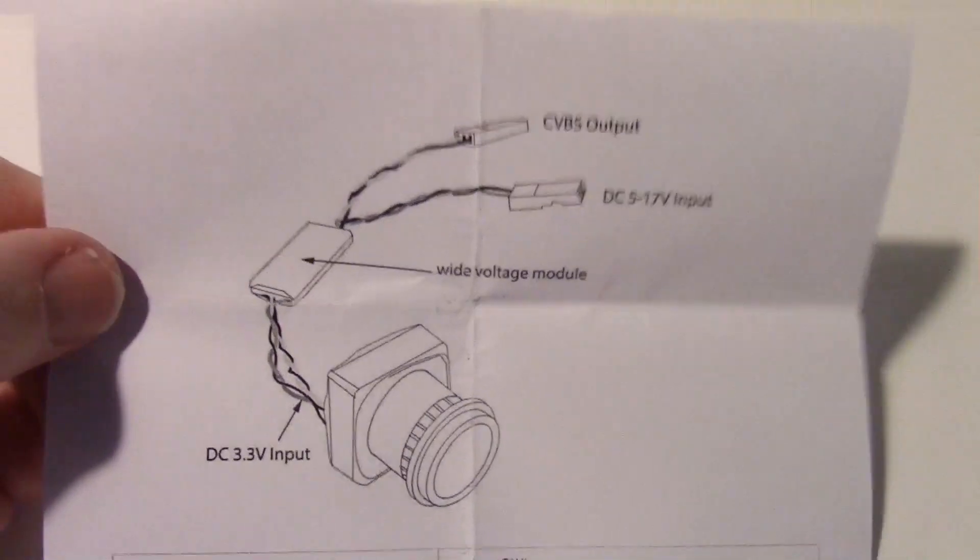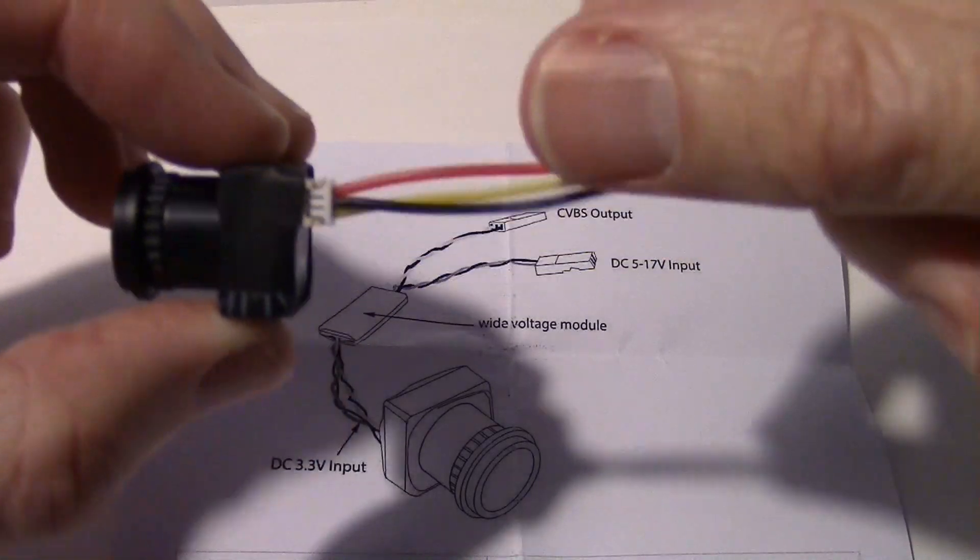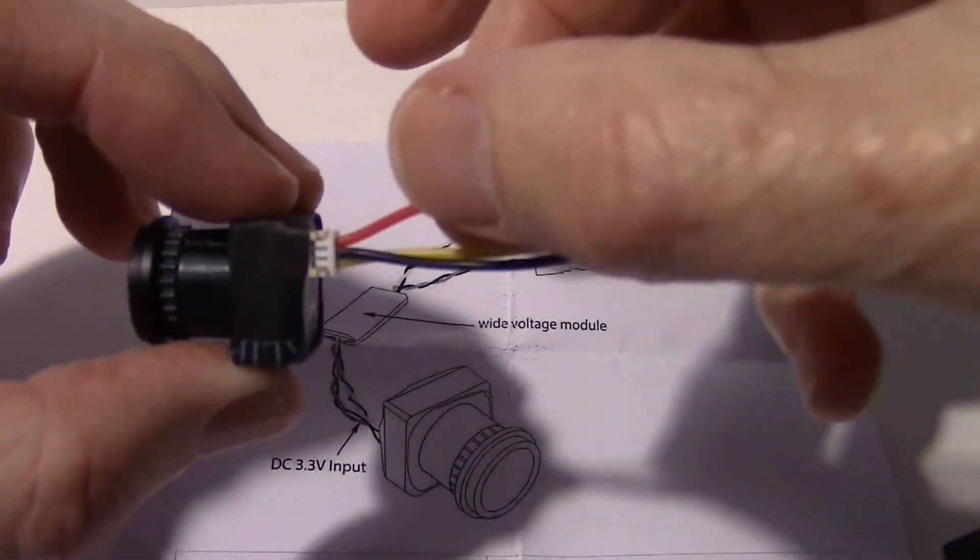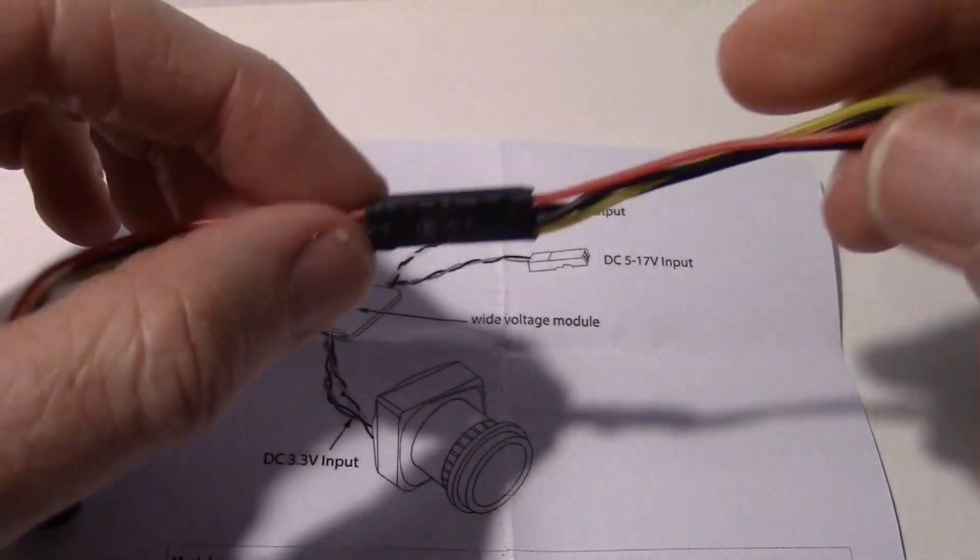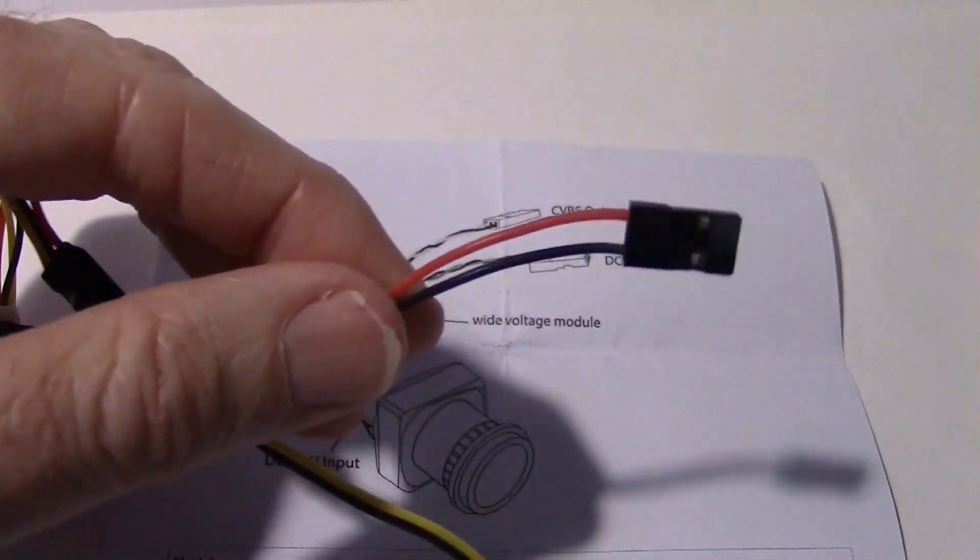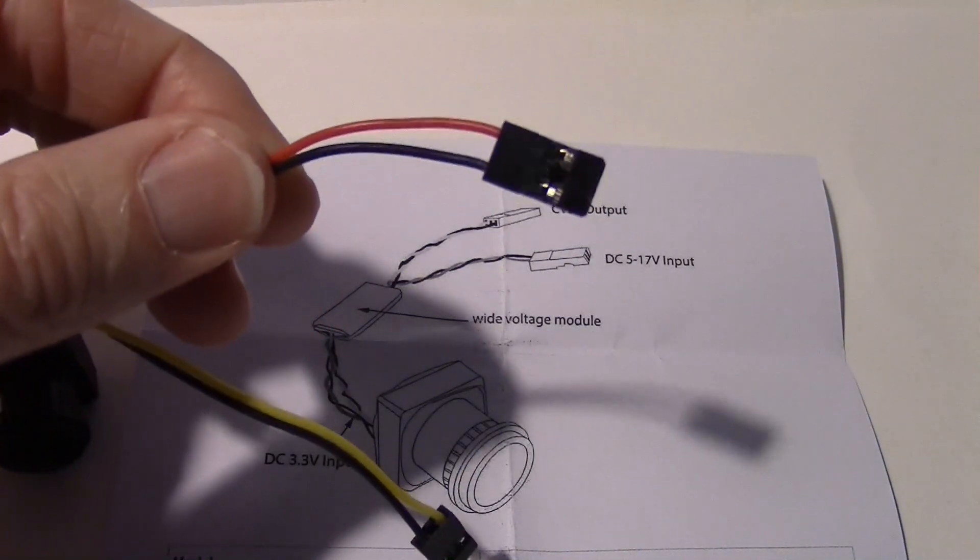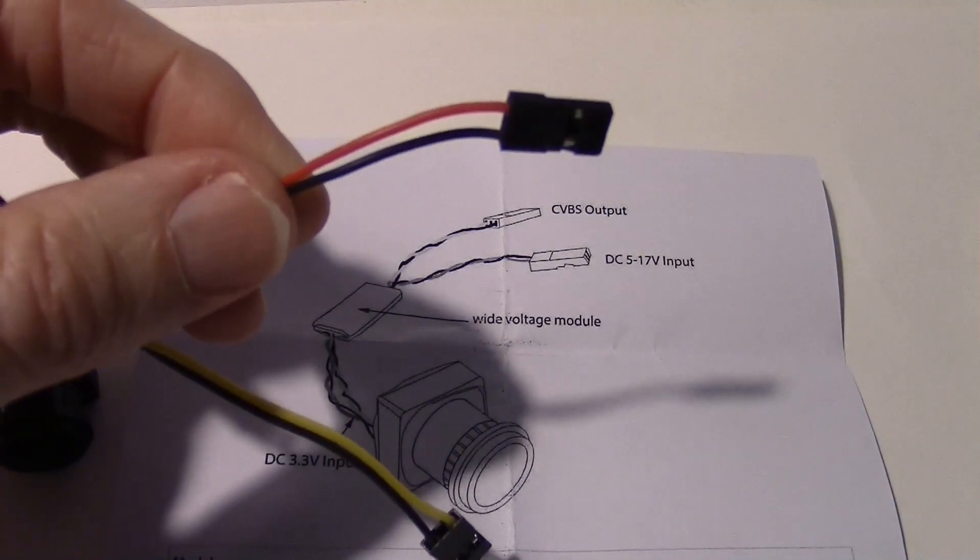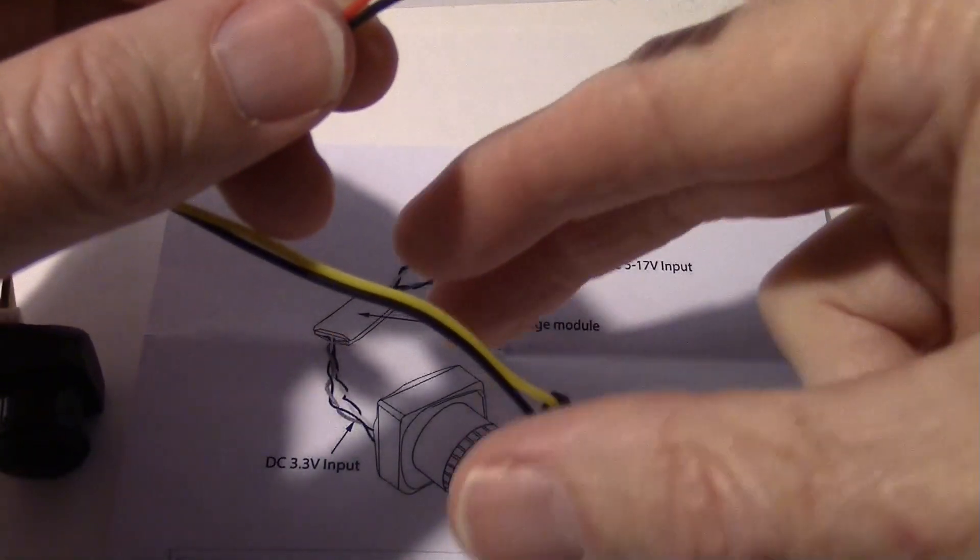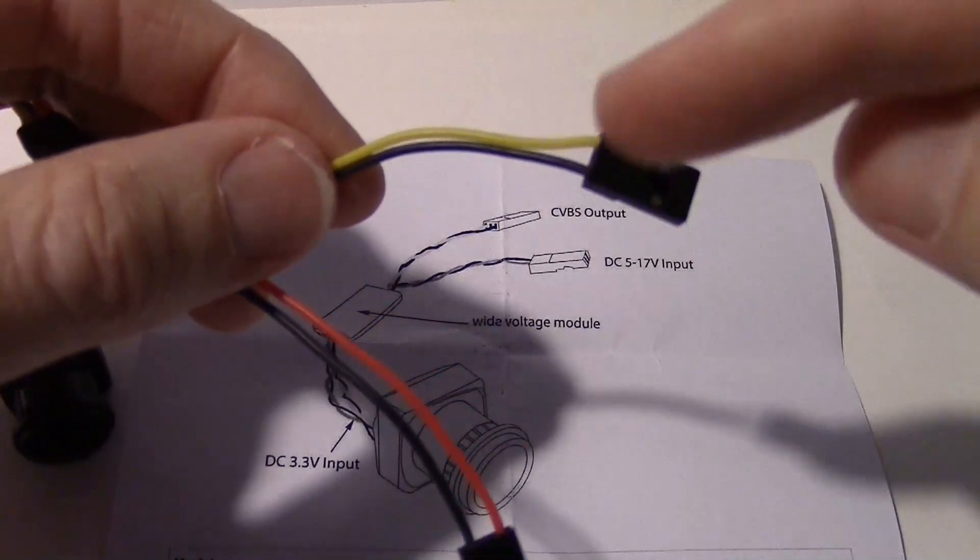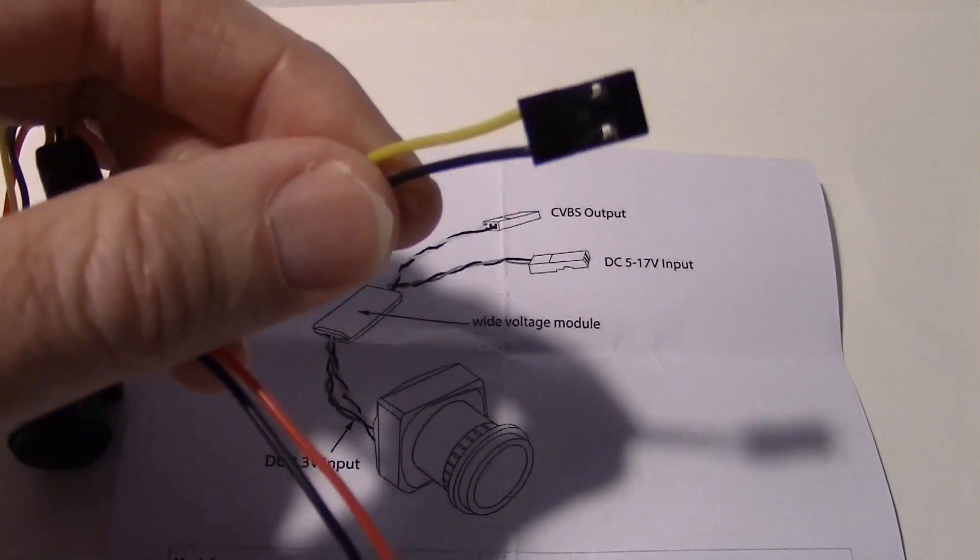Now let's look at the cable. There are three wires going into the camera, and the red one is where the 3.3 volts goes in from this little regulator. On this cable with red and black wire, you can put up to 17 volts, so you could use a 2, 3, or 4 cell battery. This is the video cable with yellow for video and black for ground.